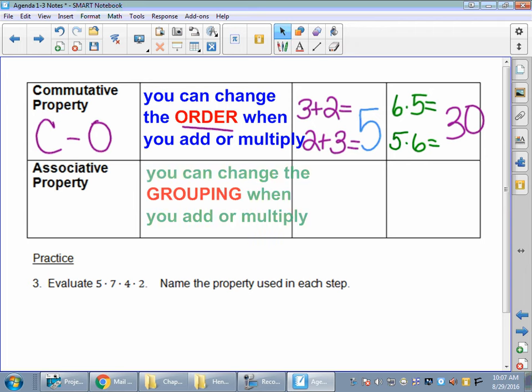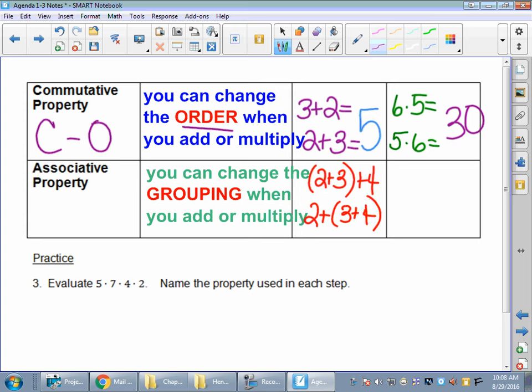Associative property says when you add or multiply, you can change the grouping symbols. Remember, grouping symbols are parentheses. So if we're going to do an example of that, we could say 2 plus 3 in parentheses plus 4. Or 2 plus the 3 plus 4 in parentheses. What do you get either way? I'm looking at a 9 no matter which way I do that. How about a 2 times 3 in parentheses and multiply that by 4. That looks weird, right? Or 2 multiplied by 3 times 4. I'm thinking either way it goes. I get a 24 for that answer.